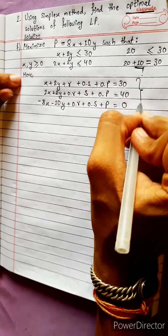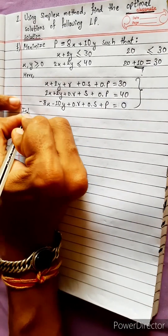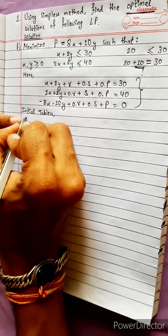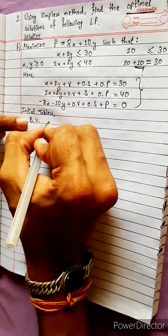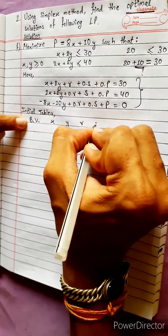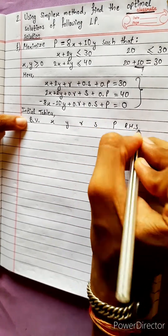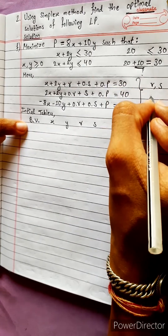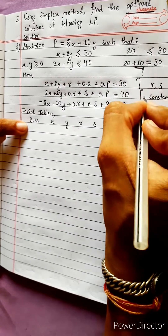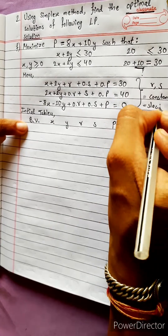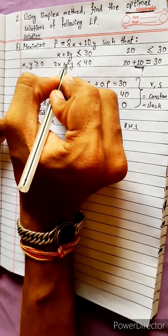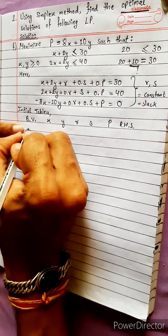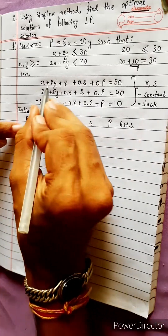This is the standard form. This is the table. Basic variables are listed here. This column represents the RHS constants. These are the slack variables, and these are the RHS values.